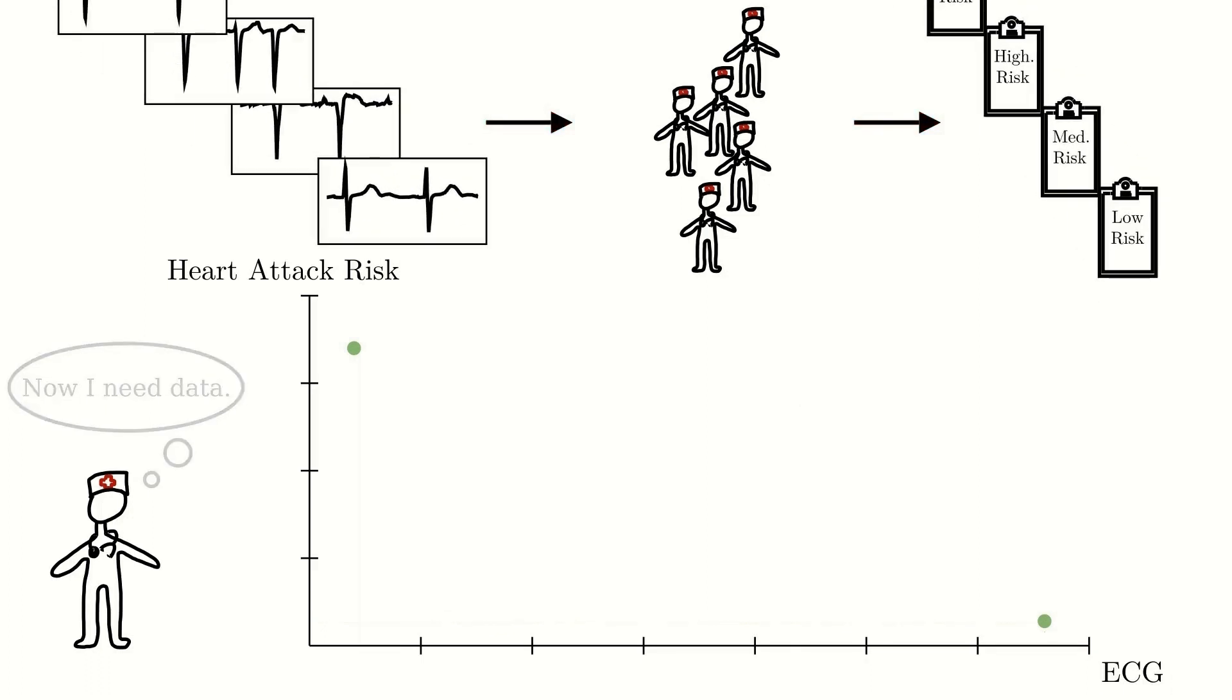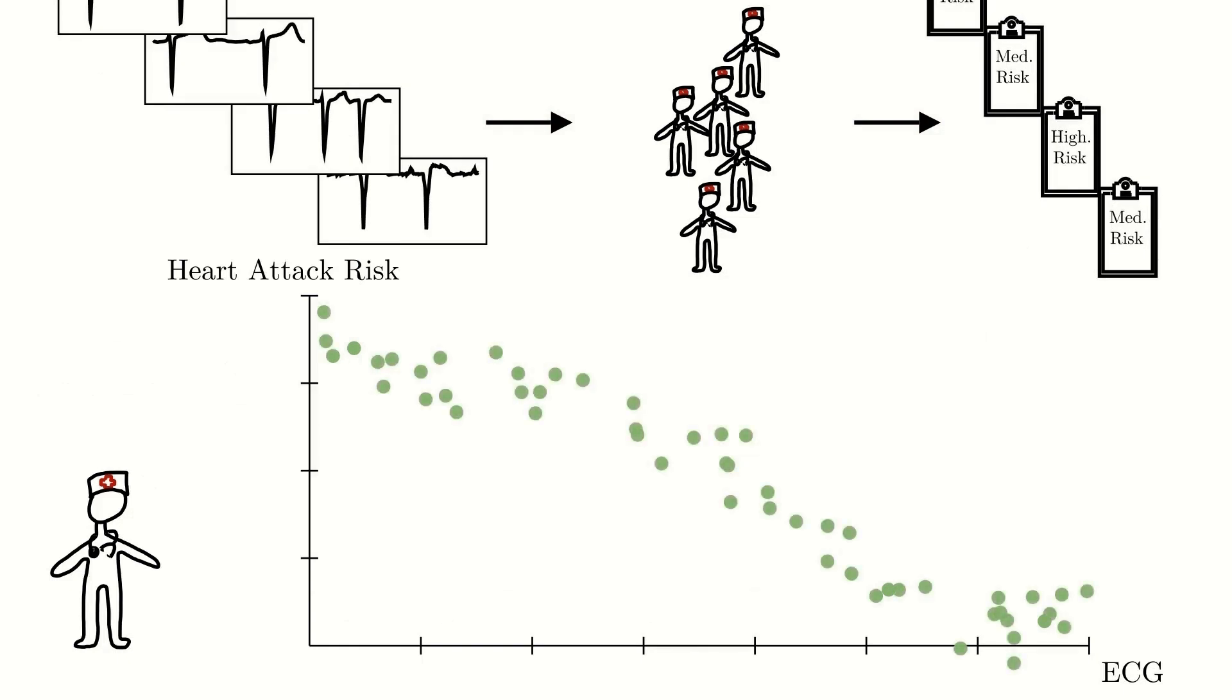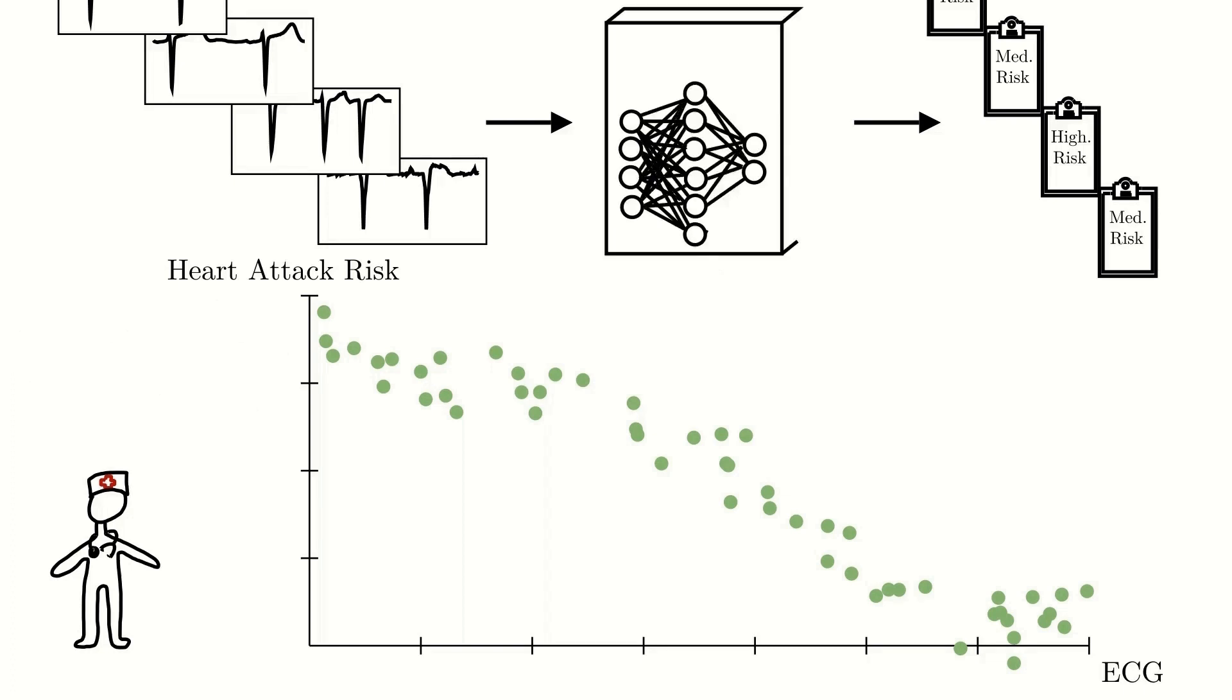This means that we have access to a lot of data points which we now can fit a machine learning model to, just like we did in the previous example of ice cream sales for the temperature where we fit a line to the data. This machine learning model should be able to predict a heart attack risk score for any ECG and match the assessments made by the doctors for the collected ECGs.